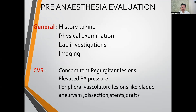For pre-anesthetic evaluation in MICS, general principles are the same as conventional cardiac surgery — history, physical examination, lab investigations, and imaging — but there are MICS-specific points. On echocardiography, always look for concomitant regurgitant lesions, like moderate to severe aortic regurgitation where aortic valve surgery is not planned — such as in a case of MVR or CABG. It causes trouble during cardioplegia delivery and LV distension, so it should always be noted.